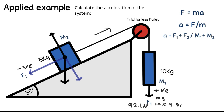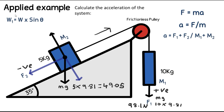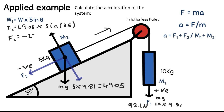Now we calculate force 2, which is more involved. First we find the weight of the slope mass: 5 × 9.81 = 49.05 Newtons. Then, using the formula from before, force 2 equals W1 = weight × sin(θ) = 49.05 × sin(35°), which gives 28.13 Newtons. Because it's acting in the opposite direction, force 2 is −28.13 Newtons.